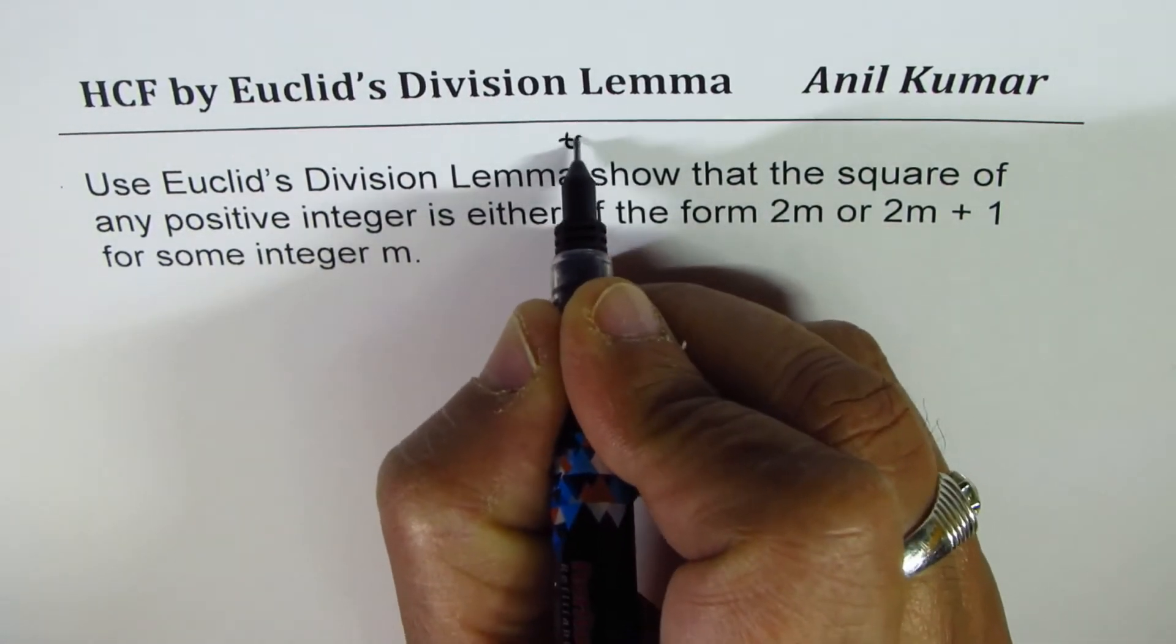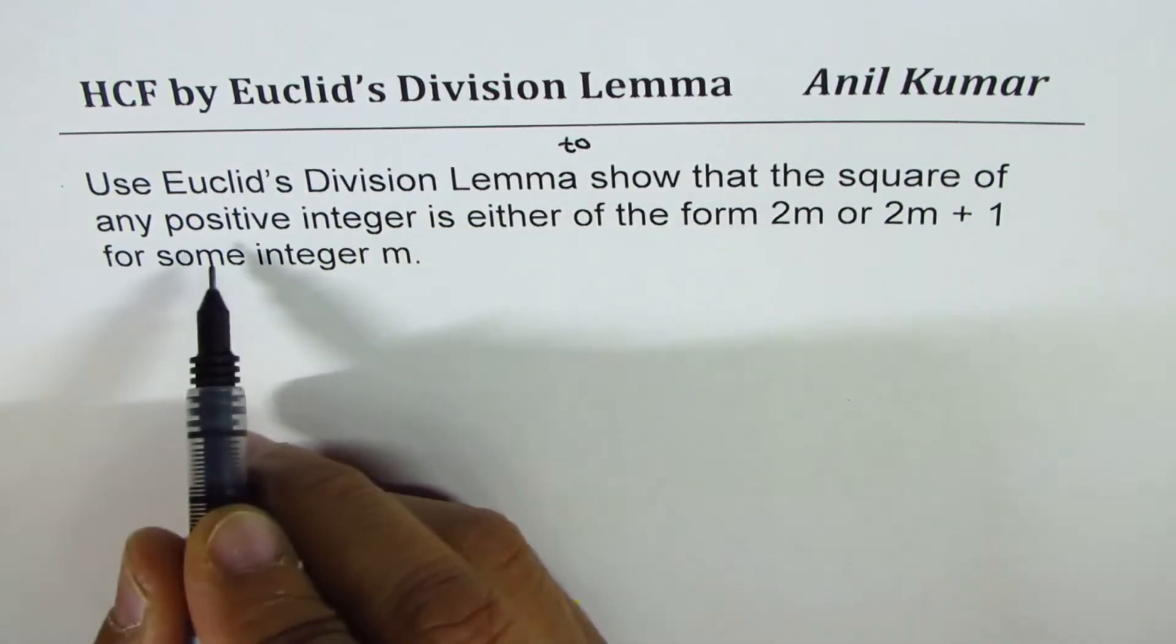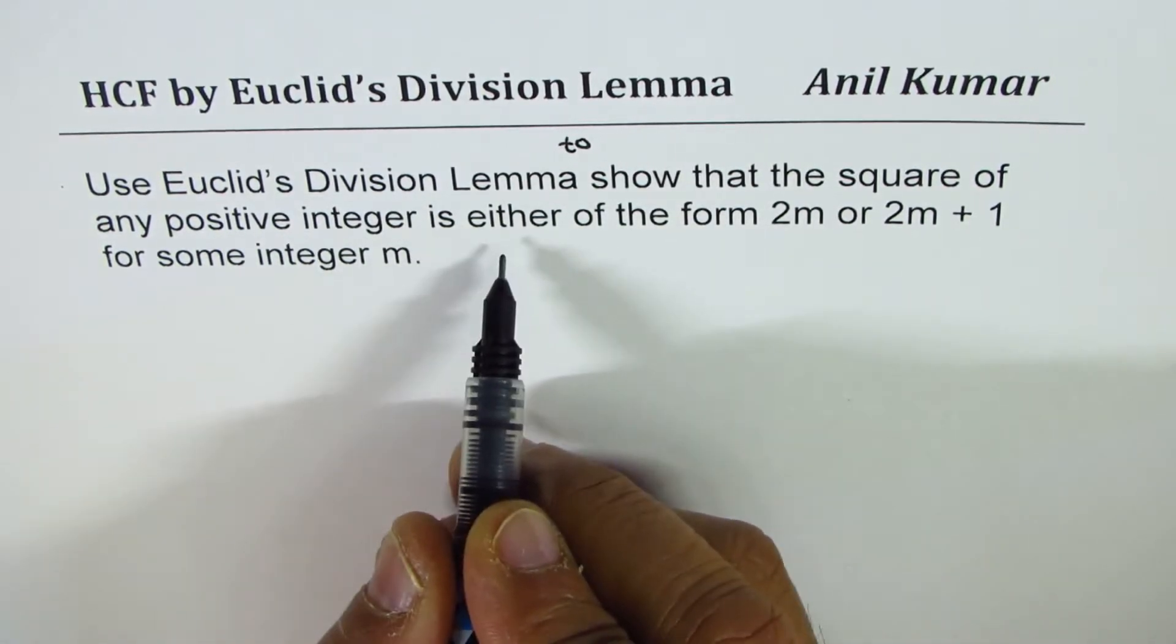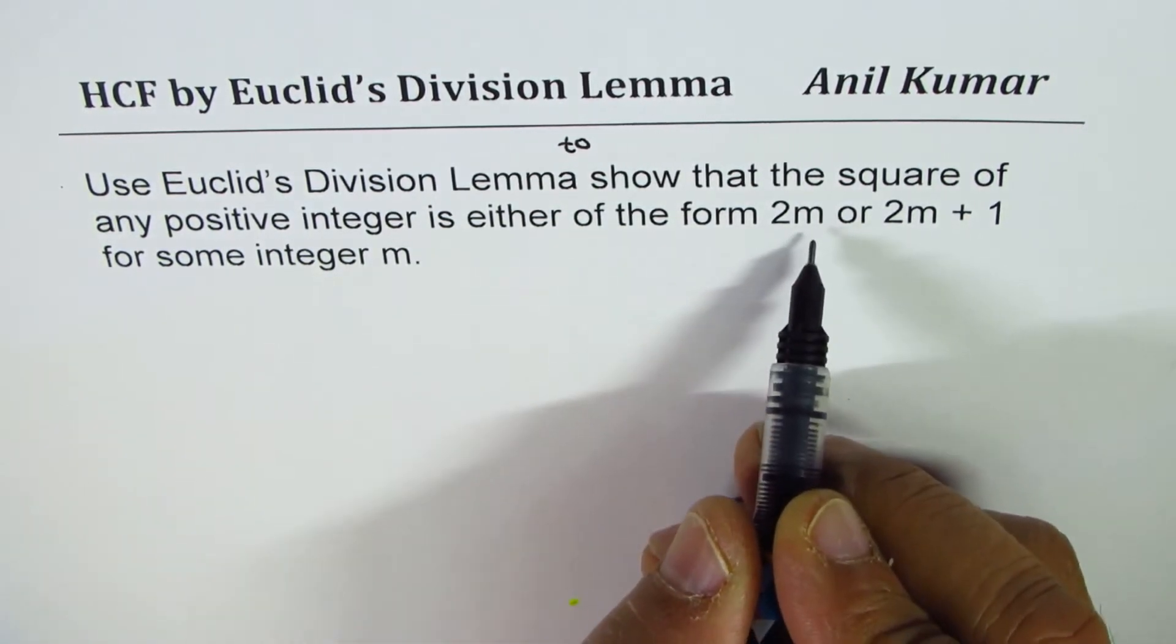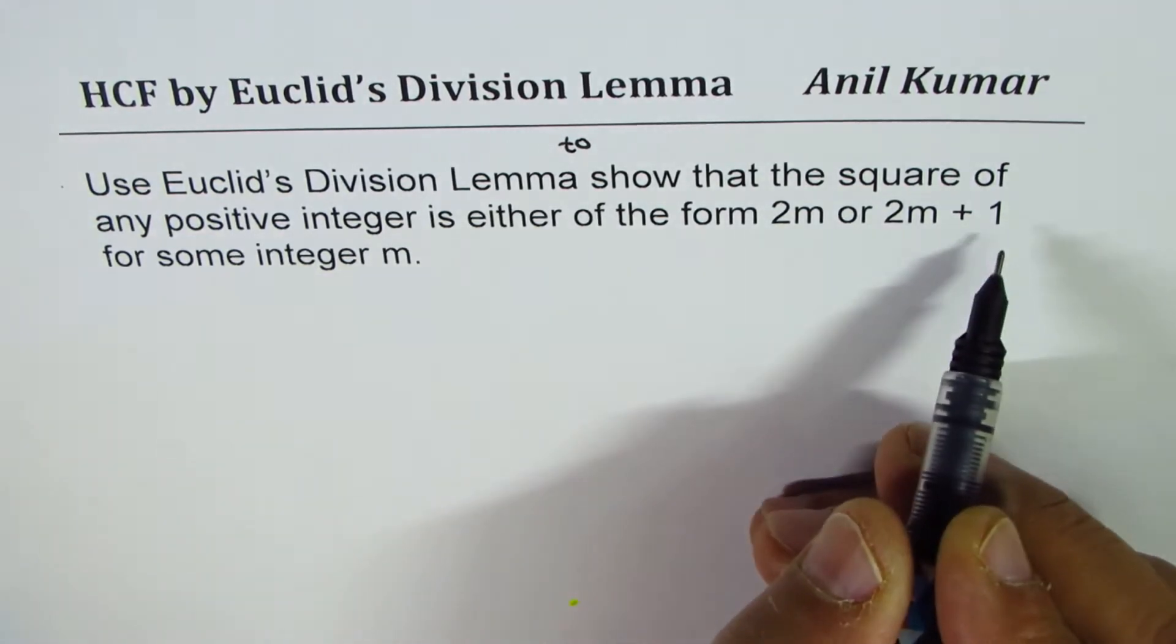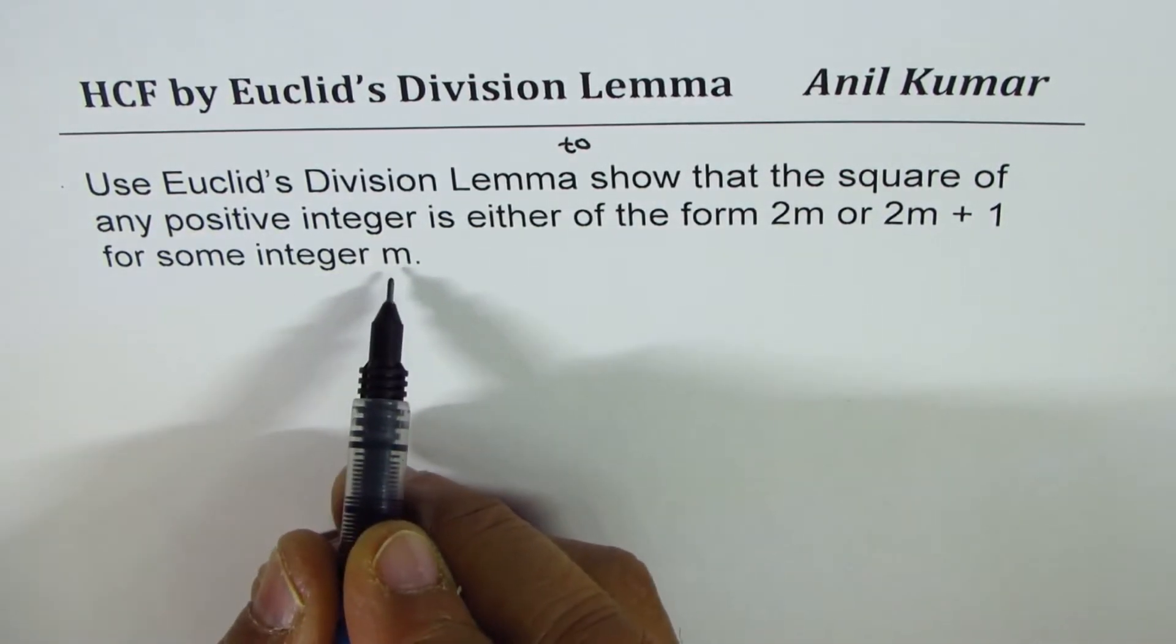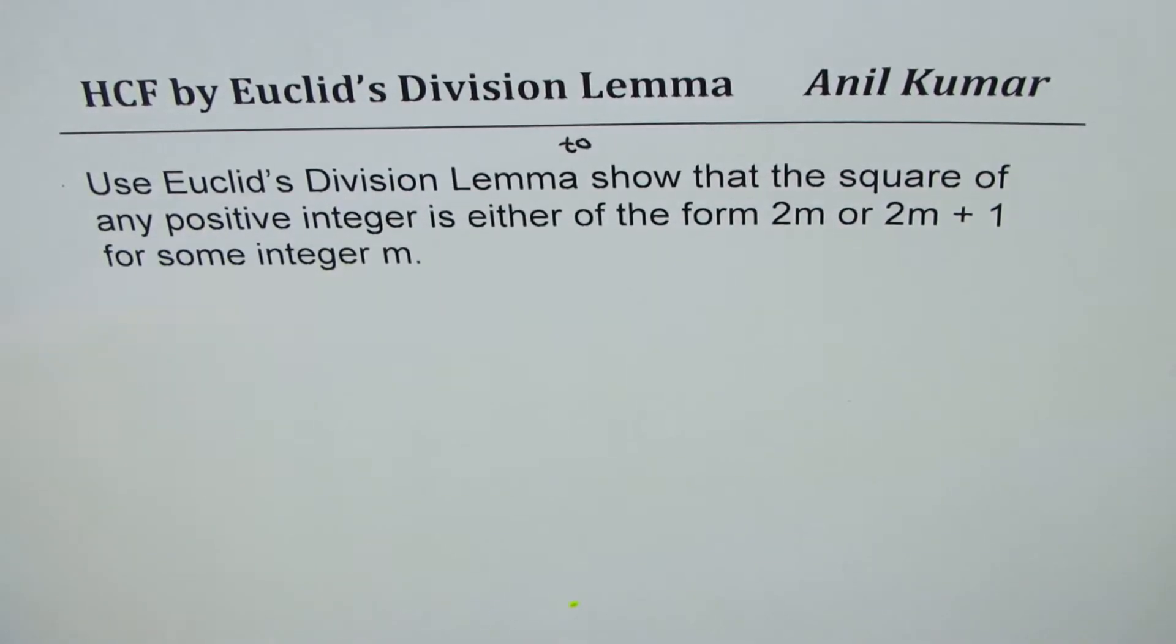show that the square of any positive integer is either of the form 2m or 2m+1 for some integer m. That is the question for you. You can pause the video, answer the question, and then look into my suggestions.